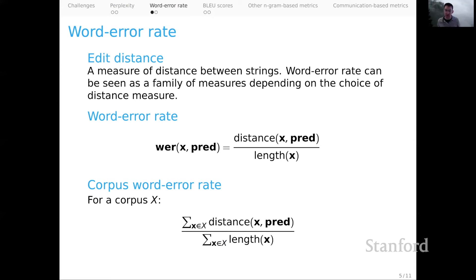The way that's standardly calculated is that the numerator is the sum of all the distances between the actual and predicted sequences, not normalized as it was up here for the word error rate. The normalization happens over the entire corpus. It's the sum of all the lengths of the actual strings in the corpus. So we have one average as opposed to taking an average of averages.